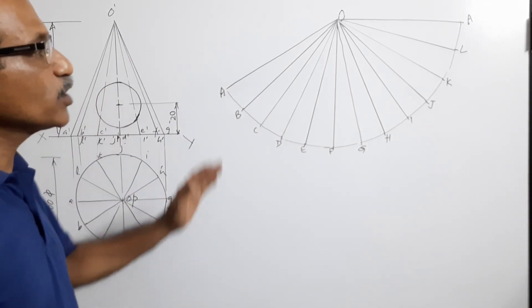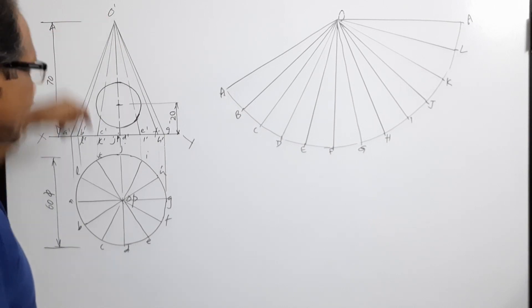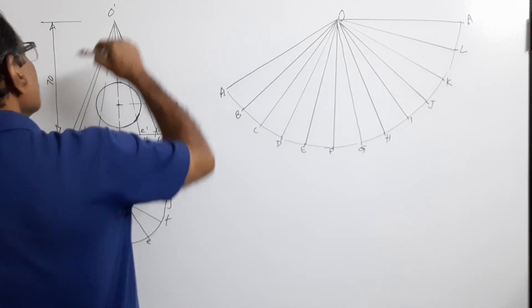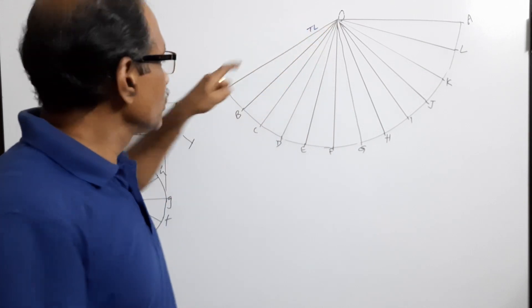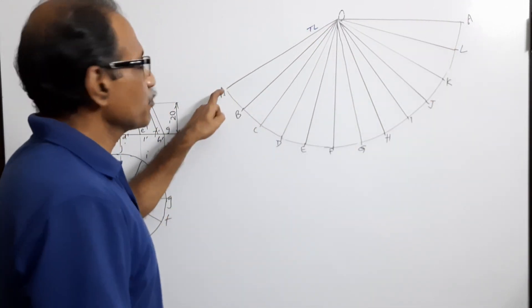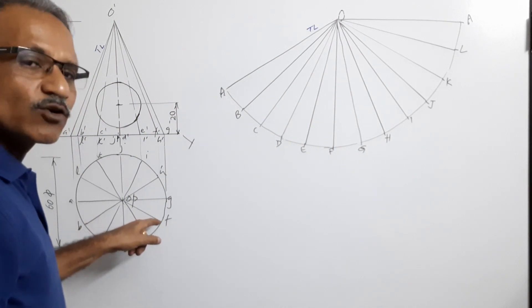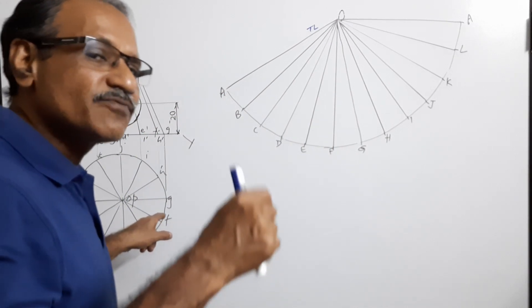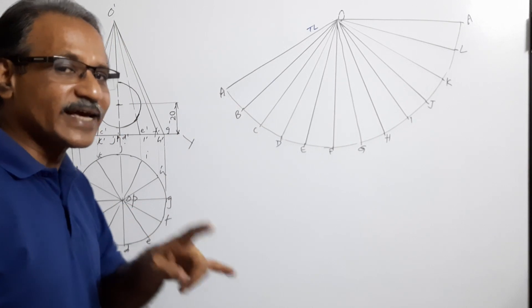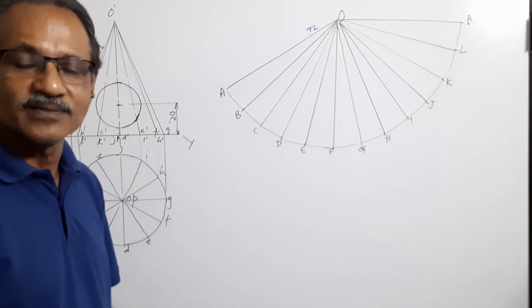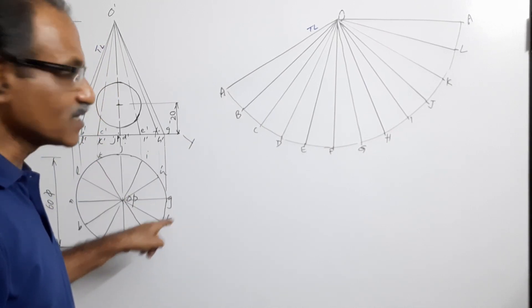Now draw the development of the lateral surface of the cone. Take the true length of generator o-dash a-dash, choose a point o anywhere, draw an arc with that true length as radius, and take a starting point a, join oa. Take this chord in your divider — the chord is almost equal to the arc, which is why we divided into 12 equal parts. If you divide into 8 parts the arc would be about 20% more than the chord. Divided into 12 equal parts, place this chord 12 times and close the arc.